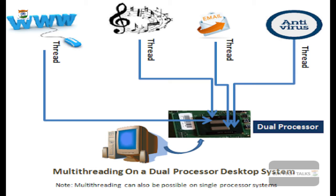Even a small application like a web browser, when opened to view any HTML or web page, can have different kinds of threads. One thread handles rendering images, another handles displaying text, and another handles establishing the network to send or receive data within the network. This is the simplest example of multithreading in practice.